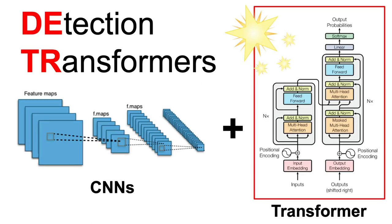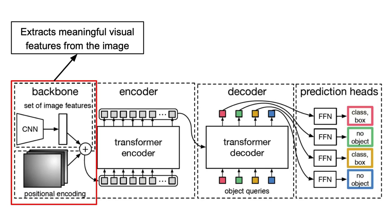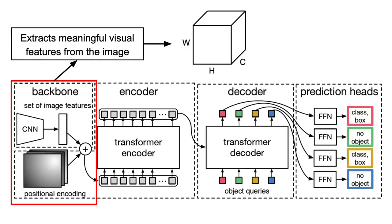So how does this combination play out in DETR? Let me break it down for you. In the first step of processing, DETR takes an input image and passes it through a CNN. The CNN extracts meaningful visual features from the image, resulting in a feature map that has a height H, a width W, and a depth C.